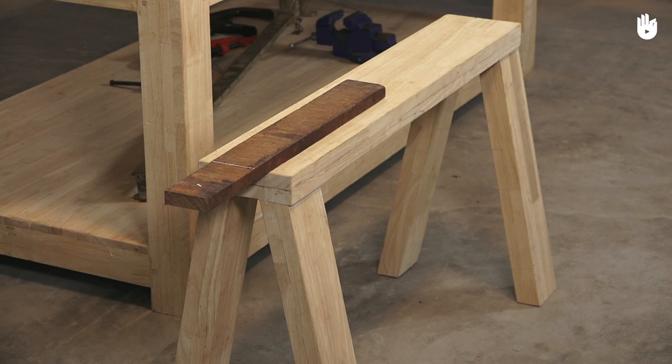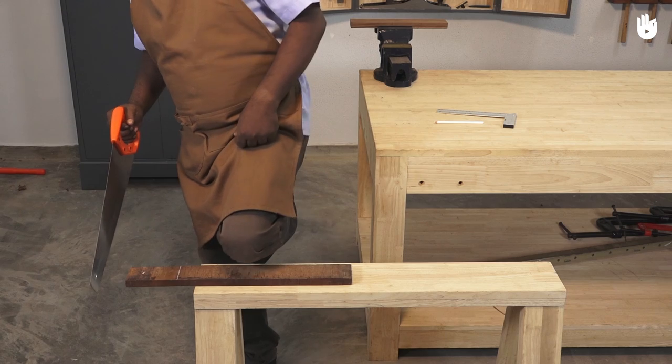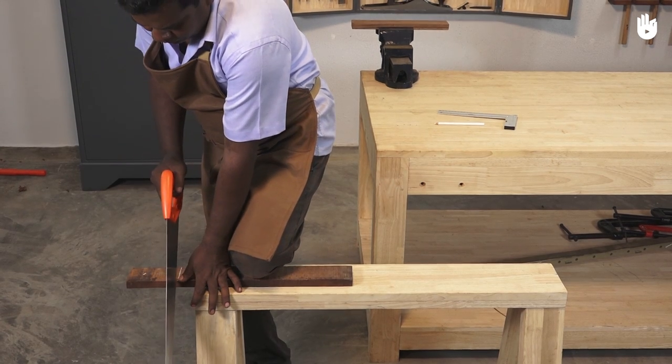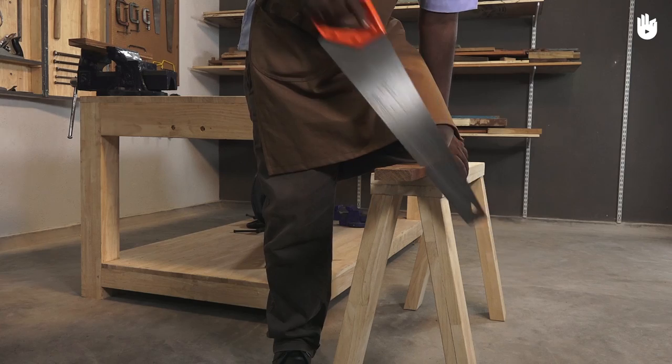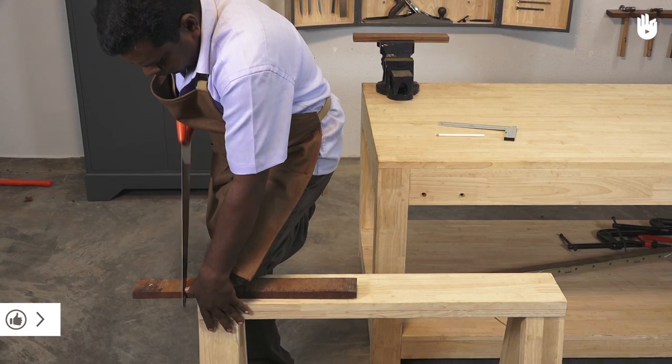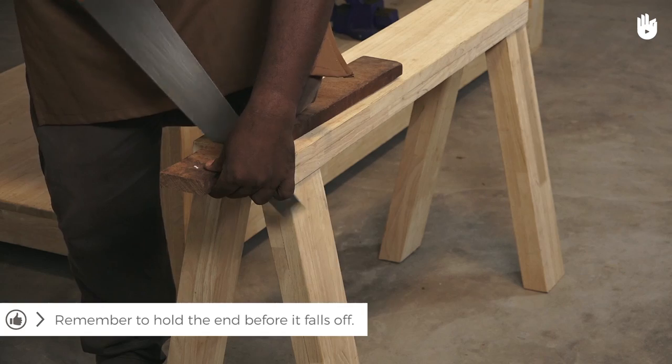You can also use a saw horse to hold the workpiece. Place your knee on top of it and apply your body weight to keep it steady. Remember to hold the end before it falls off.